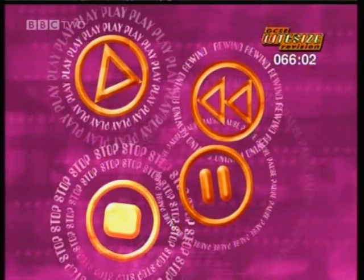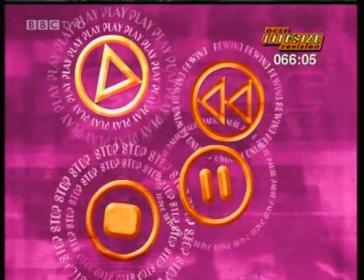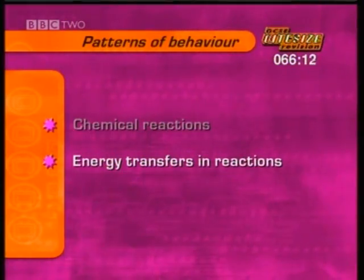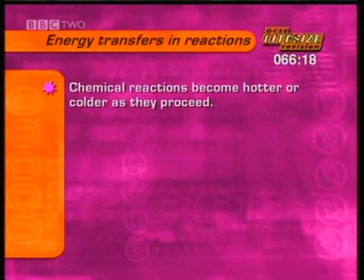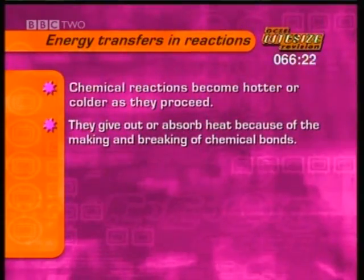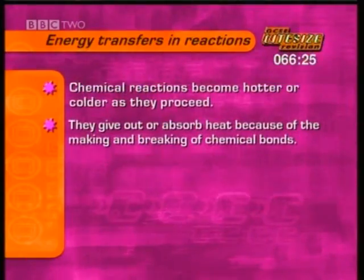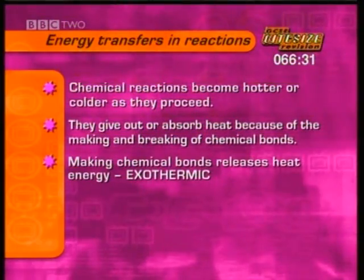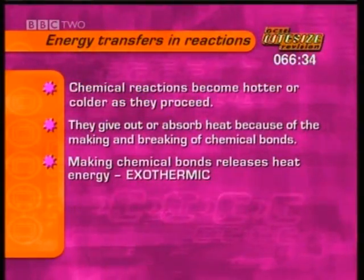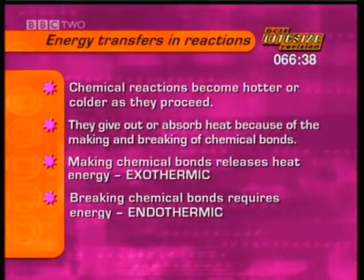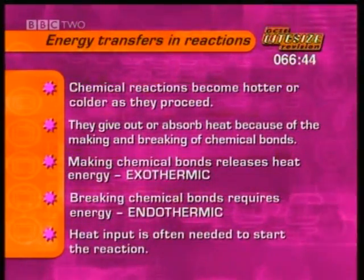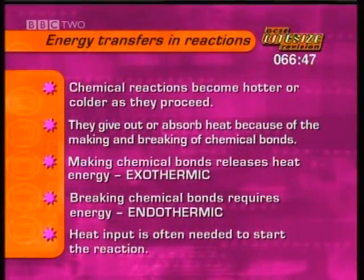That's the end of the higher tier section on chemical reactions. Next, some more about energy transfers in reactions. Most chemical reactions become hotter or colder as they proceed. They give out or absorb heat because of the making and breaking of chemical bonds. Making chemical bonds gives out or releases energy — it's called an exothermic reaction. Breaking chemical bonds requires energy — it's called an endothermic reaction. You often need to supply energy as heat to break chemical bonds and to start a chemical reaction.